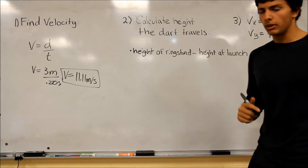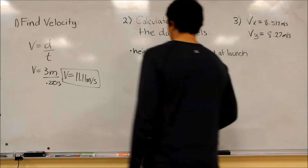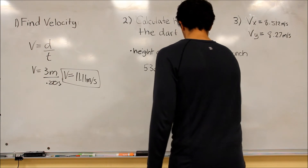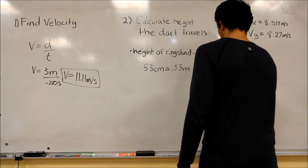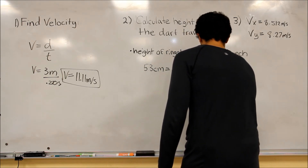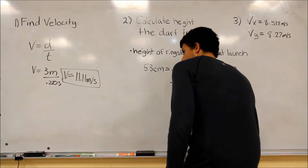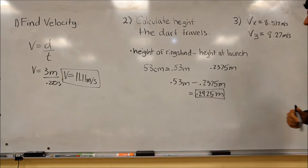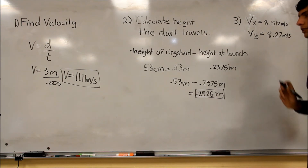Next, we must calculate the height at which the dart will actually travel. We do this by taking the height of the ring stand subtracted by the height of the dart at launch. The height of the ring stand is 53 centimeters, or 0.53 meters. The height of the dart at launch equals 0.2375 meters. Therefore, we subtract 0.53 meters by 0.2375 meters, and we find that the height of the dart while in the air equals 0.2925 meters. Our horizontal velocity equals 8.512 meters per second, and our vertical velocity equals 8.27 meters per second.